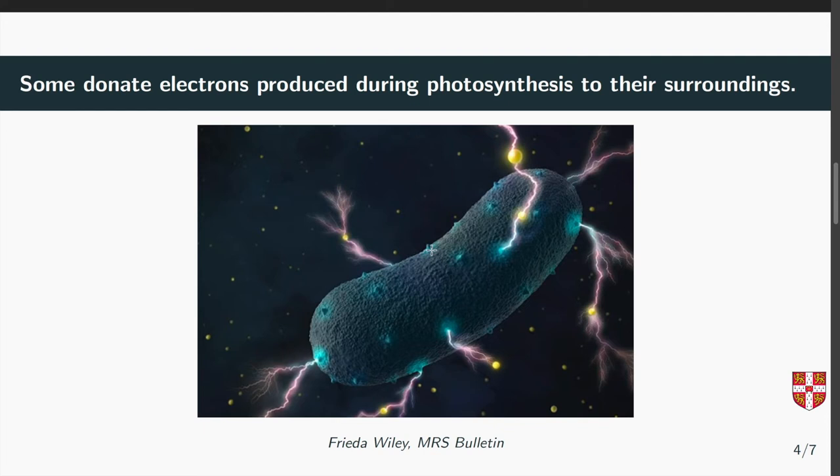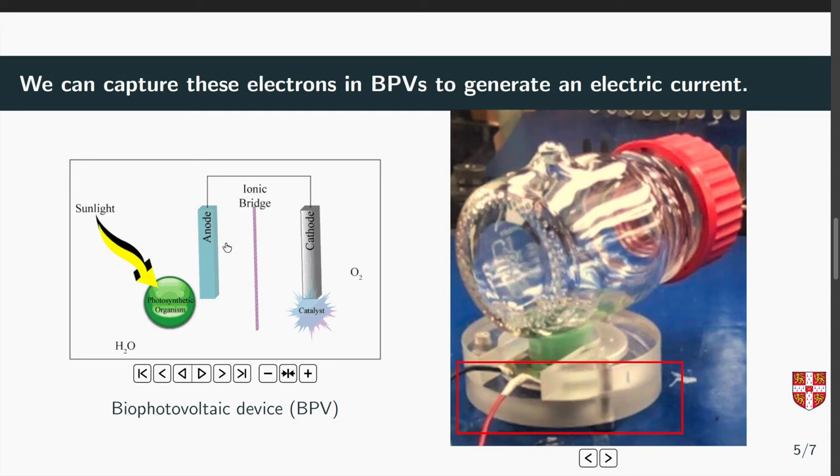Irrespective of why they do it we can capture some of these electrons in electrochemical devices called biophotovoltaics or BPVs. The BPV is an electrochemical cell which is divided into two sections. The first section is the anode. This is where we host the bacteria and where we shamelessly hijack some of the electrons that they produce. And the second half is the cathode which is open to air and this is where the electrons which are captured in the anode after traveling through a conductive wire are recombined with oxygen to produce water as your only by-product.